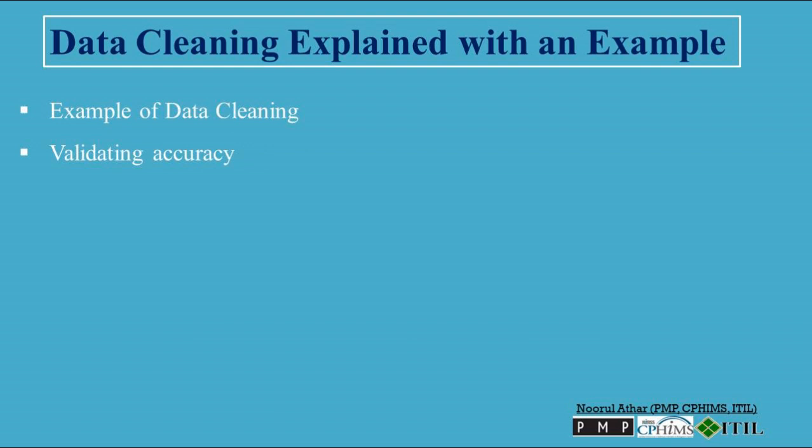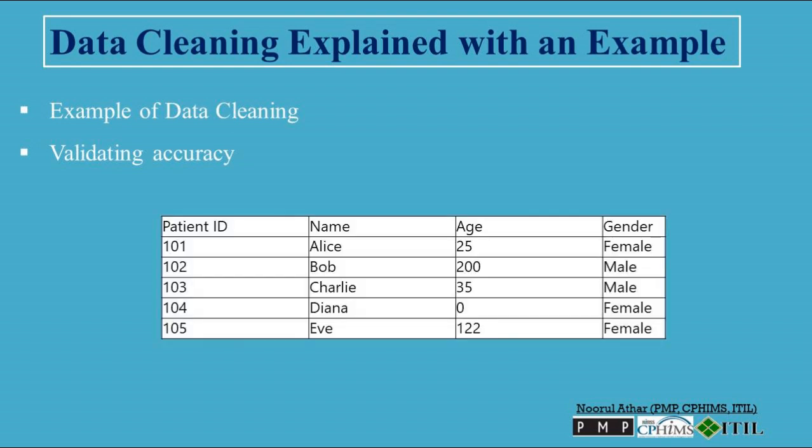Validating accuracy. Ensuring that all recorded ages are reasonable. For example, ages should typically be between 0 and 120. Any entries outside this range might be due to data entry errors and need to be corrected. Here's a table illustrating the dataset with unreasonable age data. In this example, the ages for patients with IDs 102 and 105 are unreasonable - 200 and 122 respectively - suggesting possible data entry errors. The age of 0 might also need verification depending on the context, for example, it could be valid for a newborn. To validate accuracy, these values should be reviewed and corrected if necessary to ensure they fall within a reasonable range, typically between 0 and 120 years.